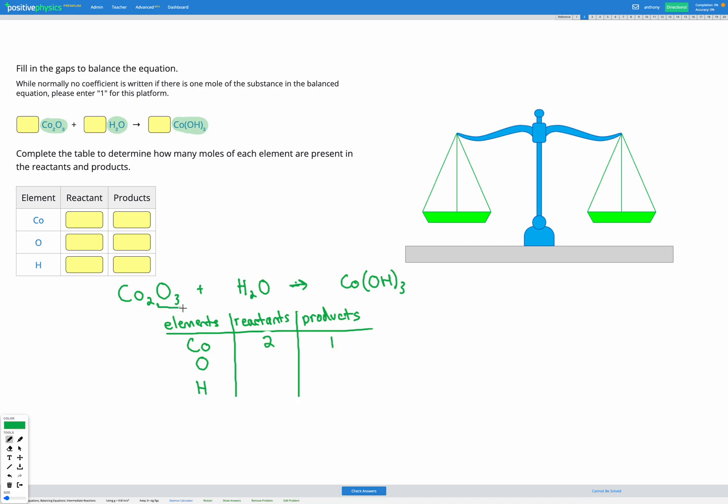For oxygen, I've got O with a subscript three and an O with no subscript. So that's four in total before in my reactants. And after I've got my O in brackets here with this OH with a subscript three after. So that tells me I've got three sets of OH. That means I've got three O's.